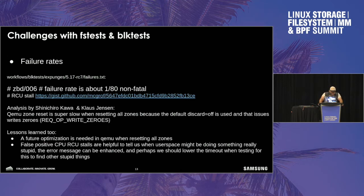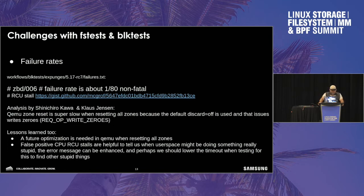Here's an example in block tests — it fails about one out of 80 times and produces an RCU stall CPU stall. I'd like to thank the folks who did the analysis of what likely could fail here. It seems like QEMU zone reset is super slow when resetting old zones, so that could be optimized. One lesson is that future optimizations are needed in QEMU for resetting old zones. The other is that false positive CPU RCU stalls are helpful, because they can also tell us when user space is doing something really stupid.